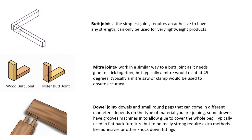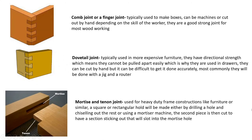A dowel joint involves drilling holes into both pieces of material and inserting wooden pegs. You apply glue to the pegs, the holes, and the surfaces, then clamp together. Some pegs have grooves so glue also fills inside the peg. It's used a lot in flat-pack furniture such as chairs. To align the holes accurately by hand, you use dowel pins — drill a hole in one piece, insert the pin, press the second piece on top, tap with a hammer, and the pin marks where to drill the second hole.